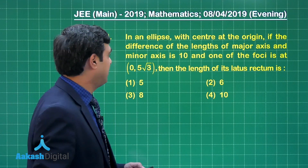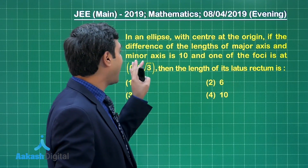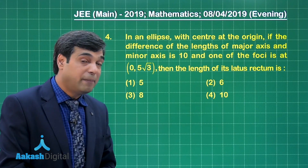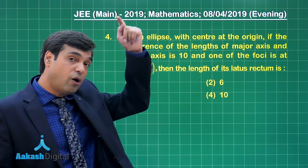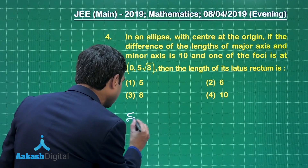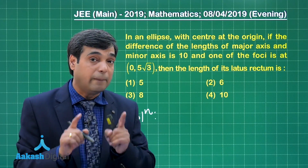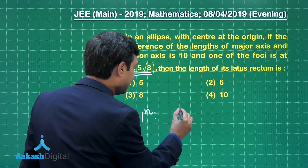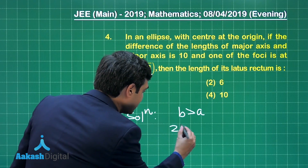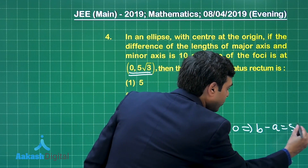Let us take up question number 4. In an ellipse with center at origin, the difference of the lengths of major axis and minor axis is 10, and one of the foci is (0, 5√3), meaning the ellipse is along the y-axis as its major axis. Consider the ellipse as x²/a² + y²/b² = 1 where b > a. The difference of lengths of major and minor axis, 2b - 2a = 10, giving b - a = 5 — equation number 1.